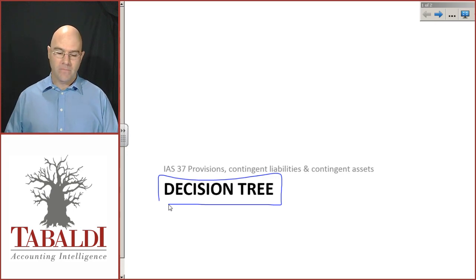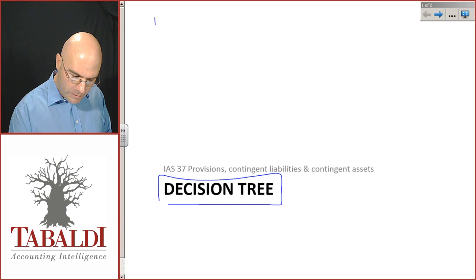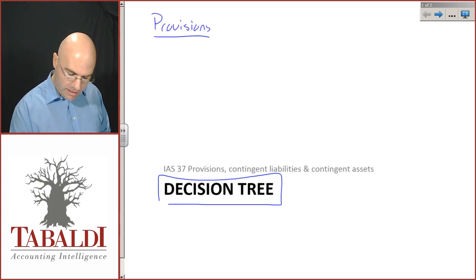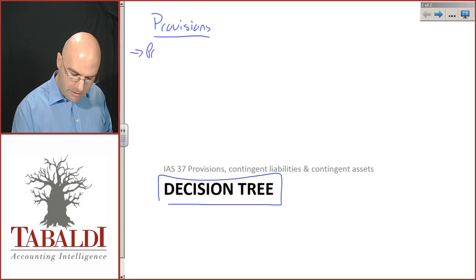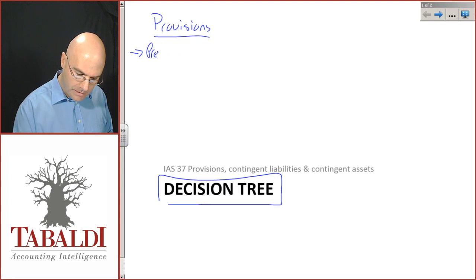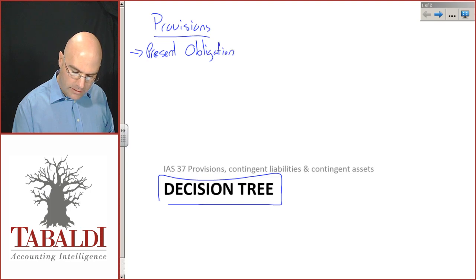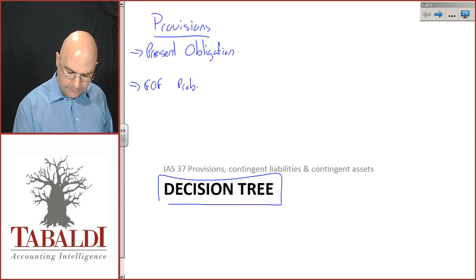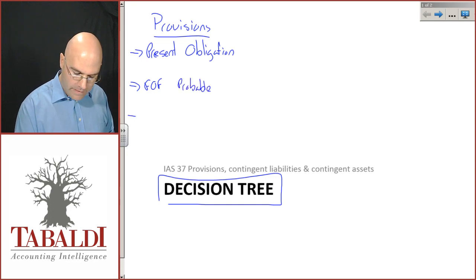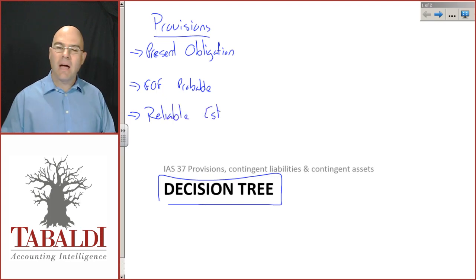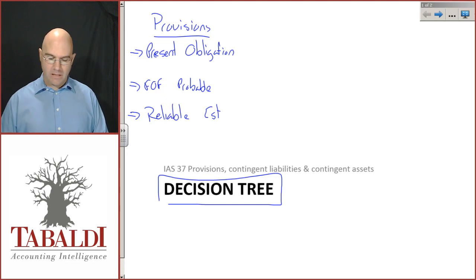Just a quick reminder from the first video: provisions under IAS 37 have recognition criteria that say there must be a present obligation, the future outflow must be probable, and you can make a reliable estimate of the amount that will be paid out.